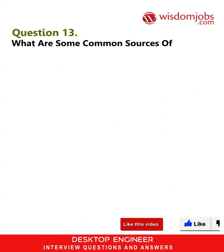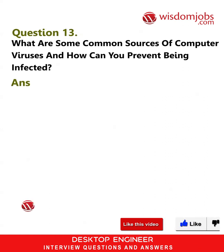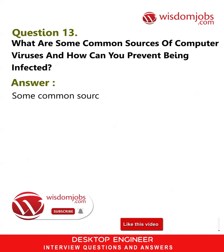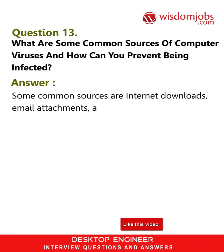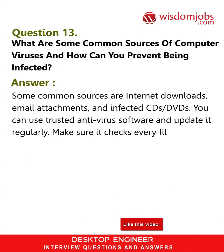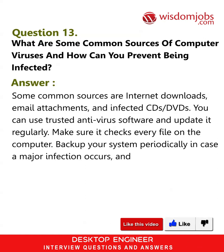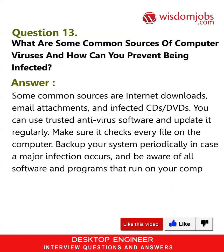Question 13: What are some common sources of computer viruses and how can you prevent being infected? Answer: Some common sources are internet downloads, email attachments, and infected CDs and DVDs. You can use trusted antivirus software and update it regularly. Make sure it checks every file on the computer. Back up your system periodically in case a major infection occurs, and be aware of all software and programs that run on your computer.